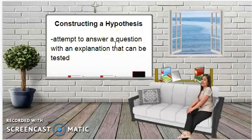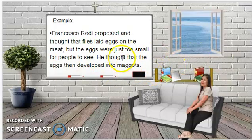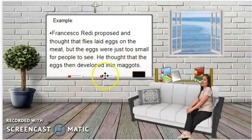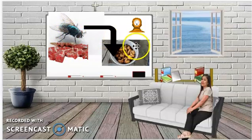Step three is constructing a hypothesis — an attempt to answer a question with an explanation that can be tested. For example, Francesco Redi proposed that flies laid eggs in the meat, but the eggs were too small for people to see. That is Redi's hypothesis, and as you can see in the picture, the meat now has a fly on it.